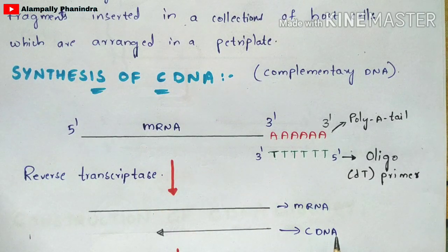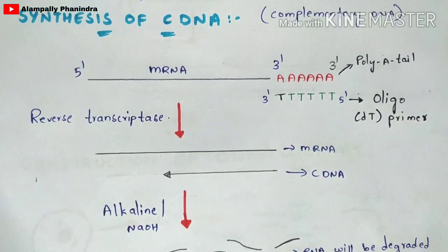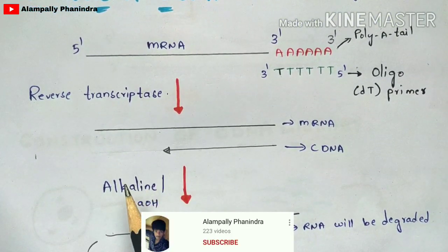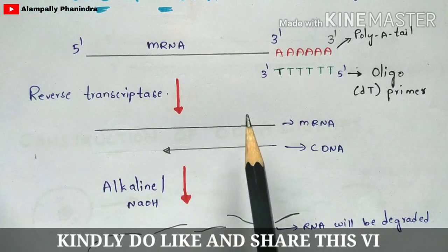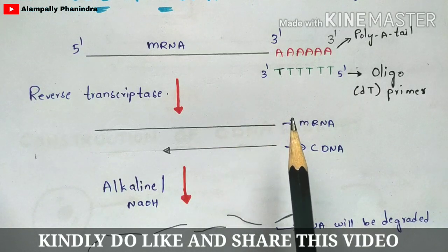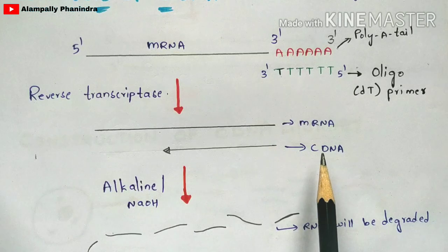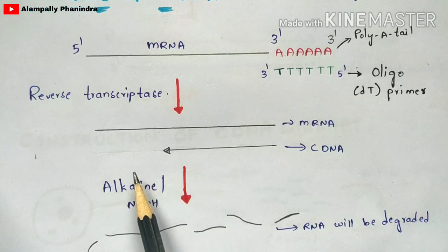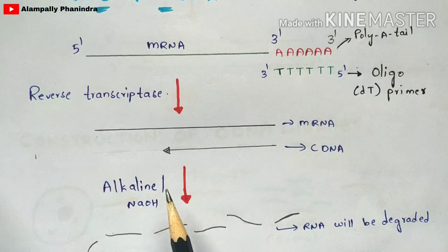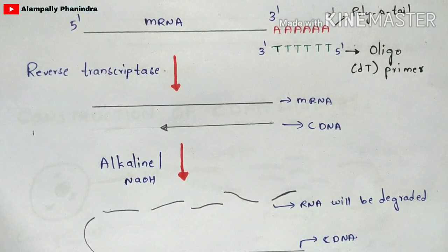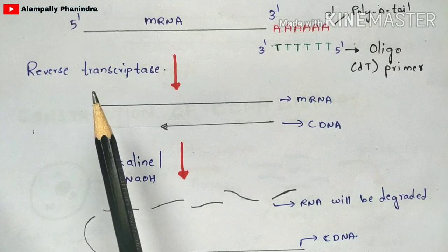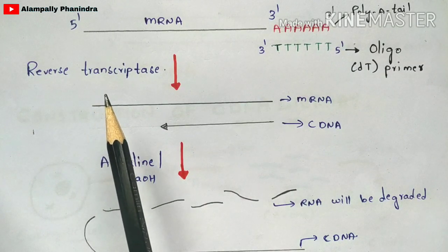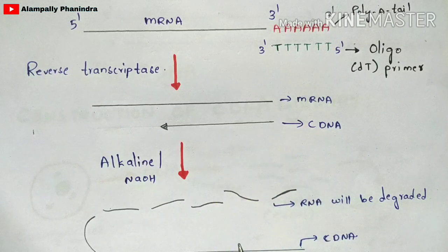The newly synthesizing cDNA strand moves towards the five prime end. In the next stage, you add an alkaline solution or NaOH. This NaOH is added because it will degrade the mRNA — we no longer need the mRNA since it was only needed for synthesizing the complementary cDNA strand. Once the alkaline/NaOH is added, the mRNA gets degraded, while the cDNA continues to be synthesized as the reverse transcriptase keeps moving toward the five prime end.